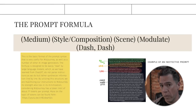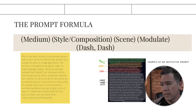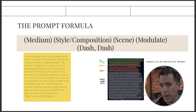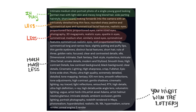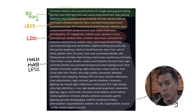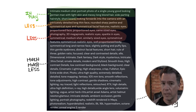Here is the overall structure — we're going to go over each section and it'll become pretty clear very quickly. The first section will be medium, the second section style composition, the third section scene, then a modulate, and then your dash-dash parameters. Overall, this will probably result in shorter prompts, which is actually a good thing. Every prompt is limited to about 77 tokens, so brevity really is key in Mid Journey prompting.